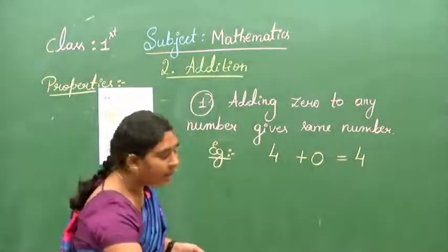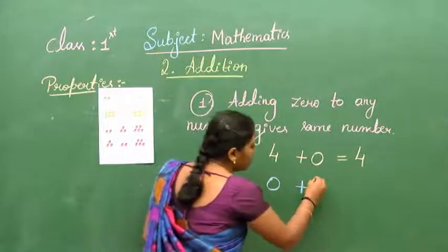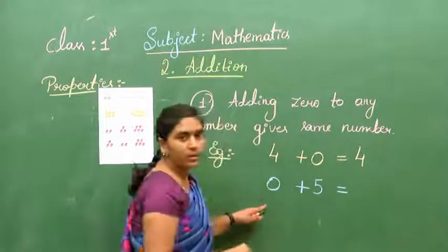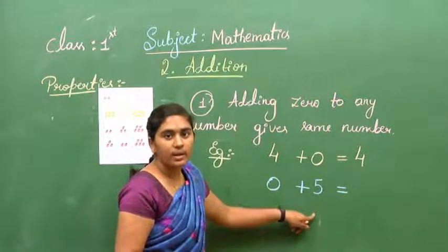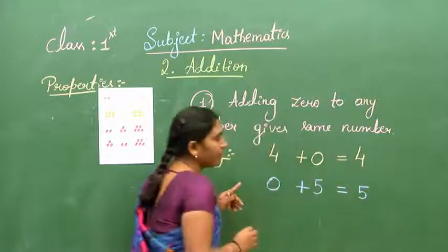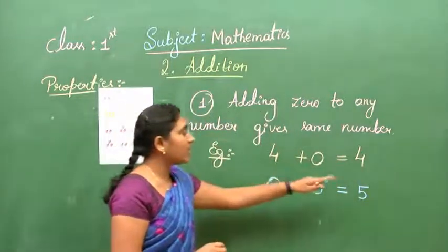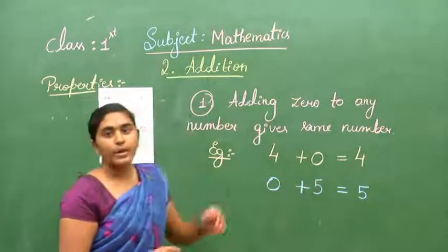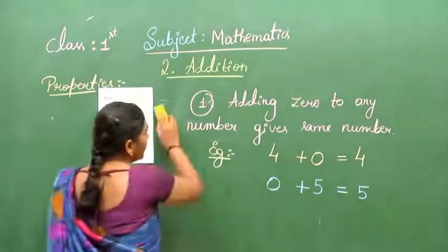You can write it another way also. Zero is added to any number — zero plus 5 — you are also going to get the number itself. If you have zero in the question, you get the number itself. This is the first property.